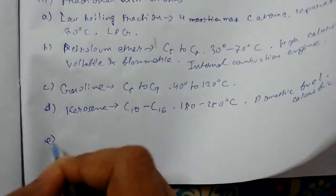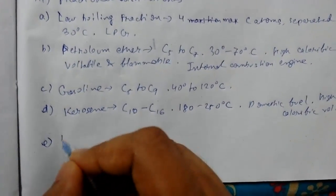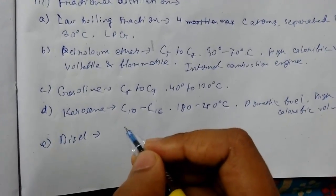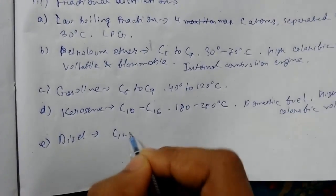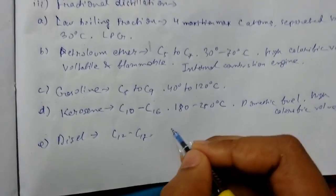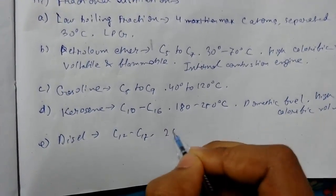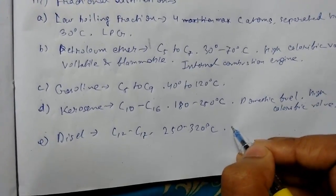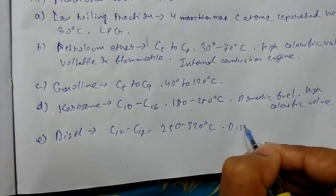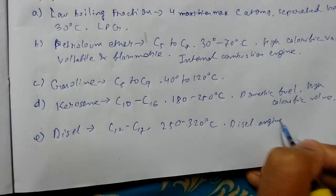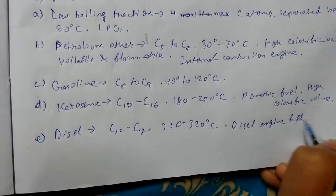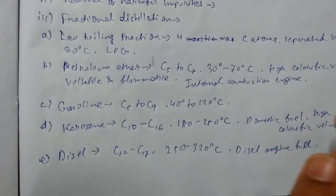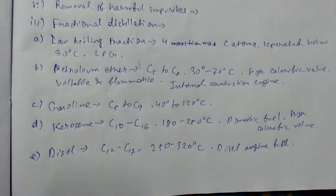Next we have diesel, which comprises carbon atoms from C12 to C17, with a boiling point of 250 to 320 degrees Celsius. It is mainly used as diesel engine fuel and also has a high calorific value. That covers fractional distillation — thanks for watching.